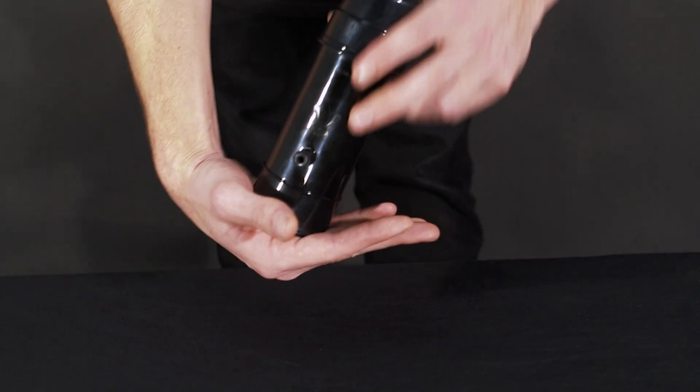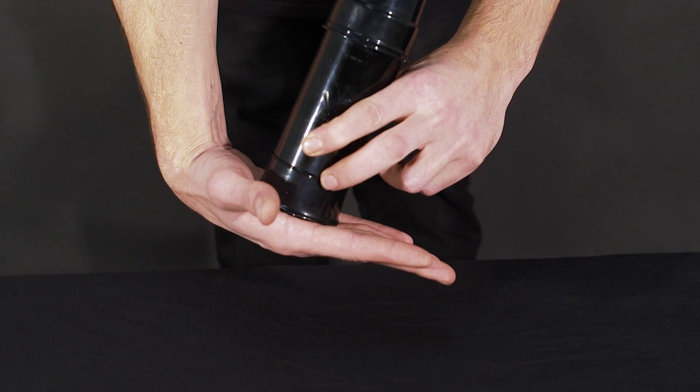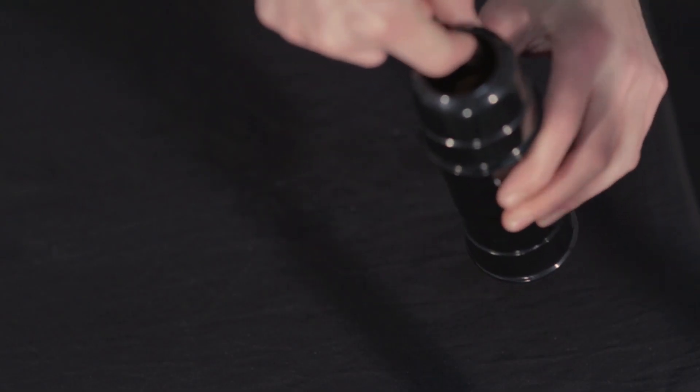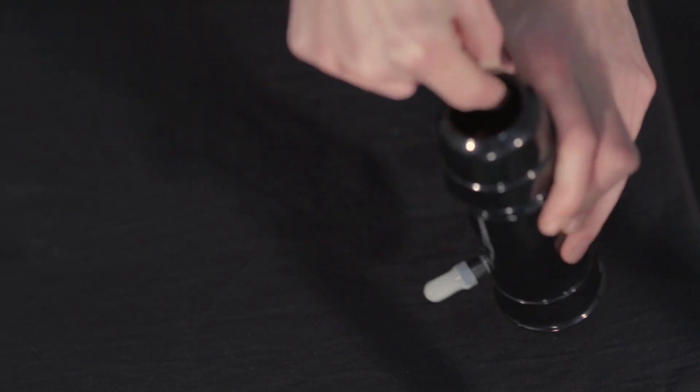Check for air leaks by covering the large end with your hand and gently pressuring the cylinder with your mouth. If you detect a leak, mix a little more glue and carefully apply along the joining edge inside the cylinder.